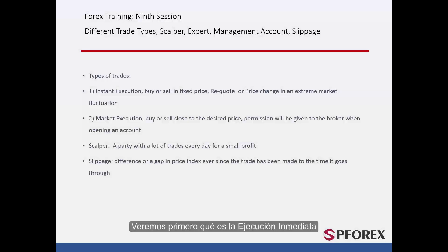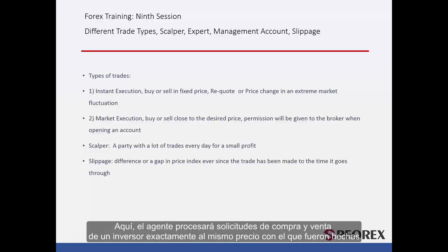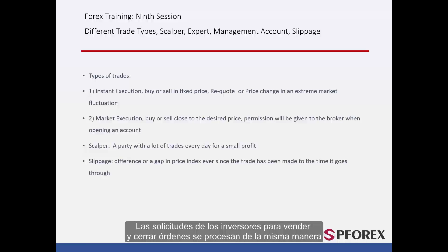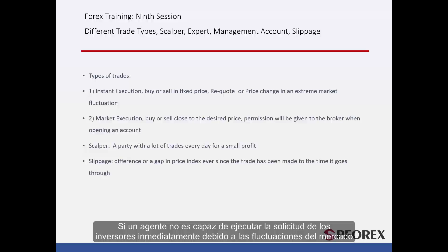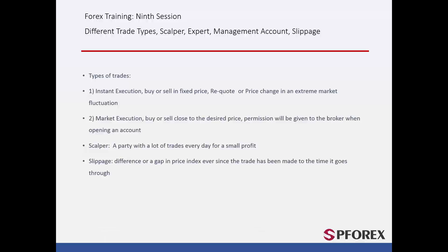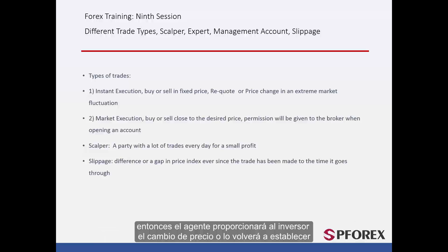First we will look at instant execution. Here the broker will process buy or sell requests from an investor at the exact price they made. Requests from the investor to sell and close orders are handled the same way. If a broker is not able to execute the investor's request immediately due to market fluctuations, then the broker will provide the investor with the price change or a requote.